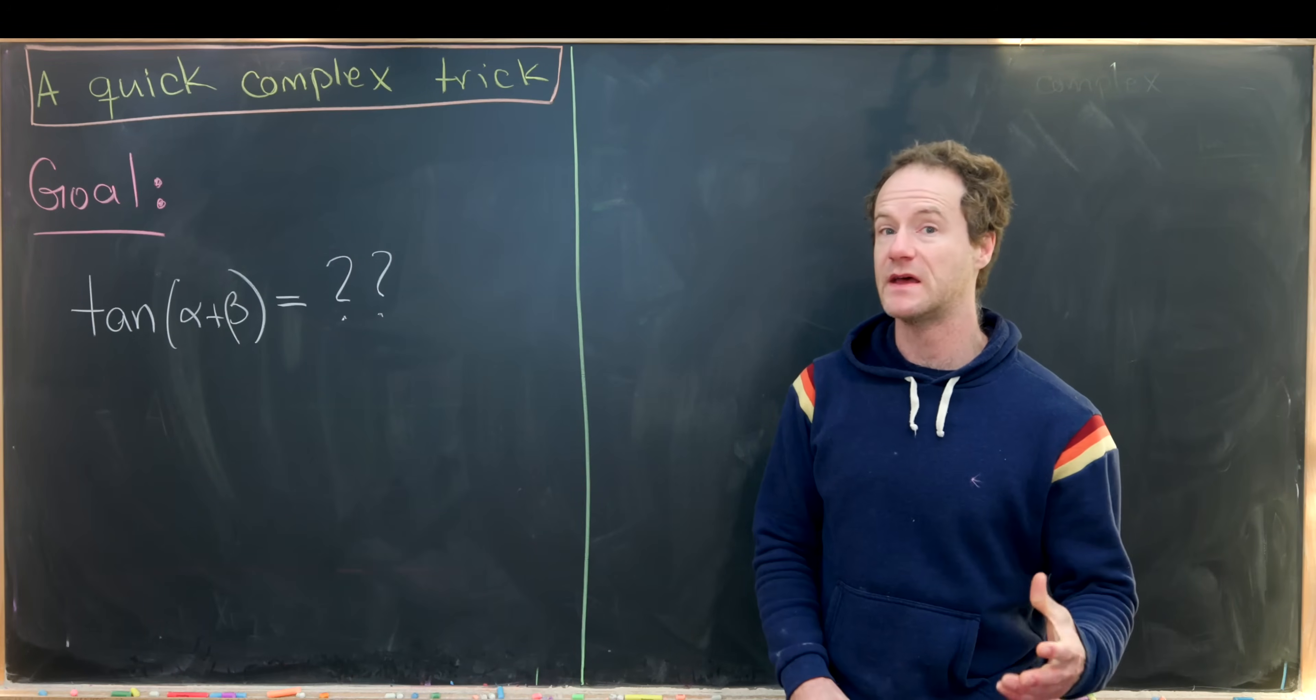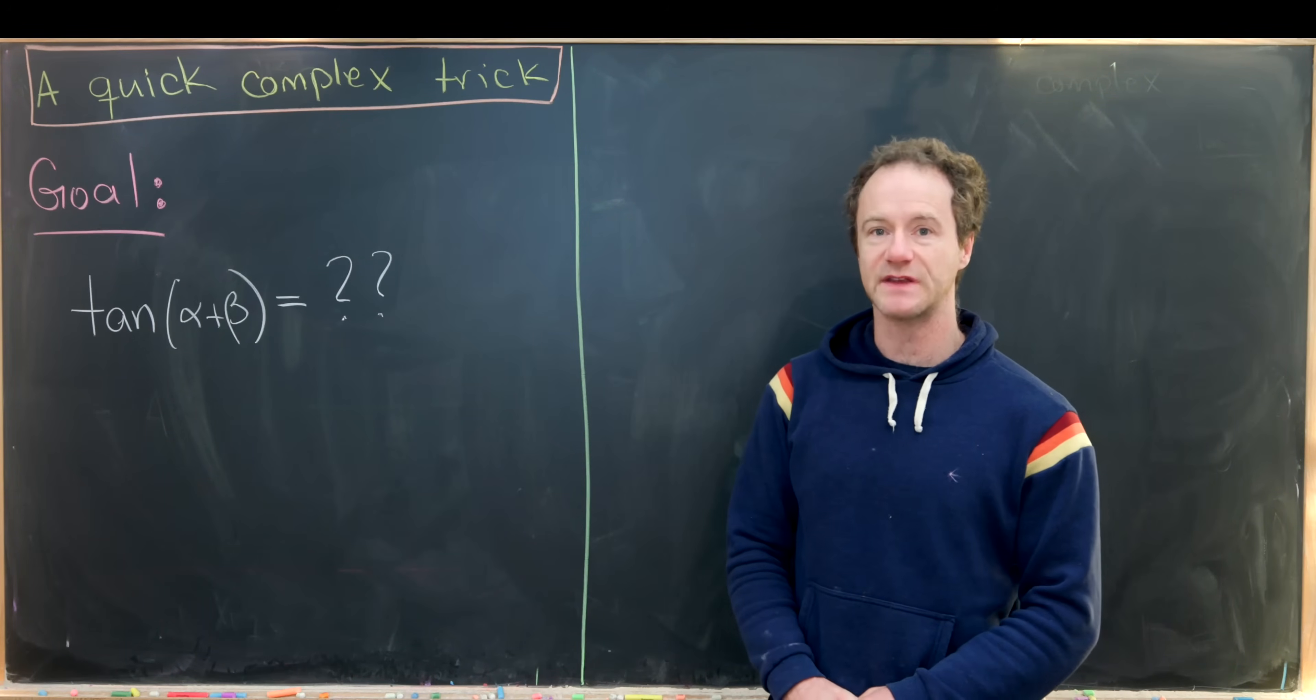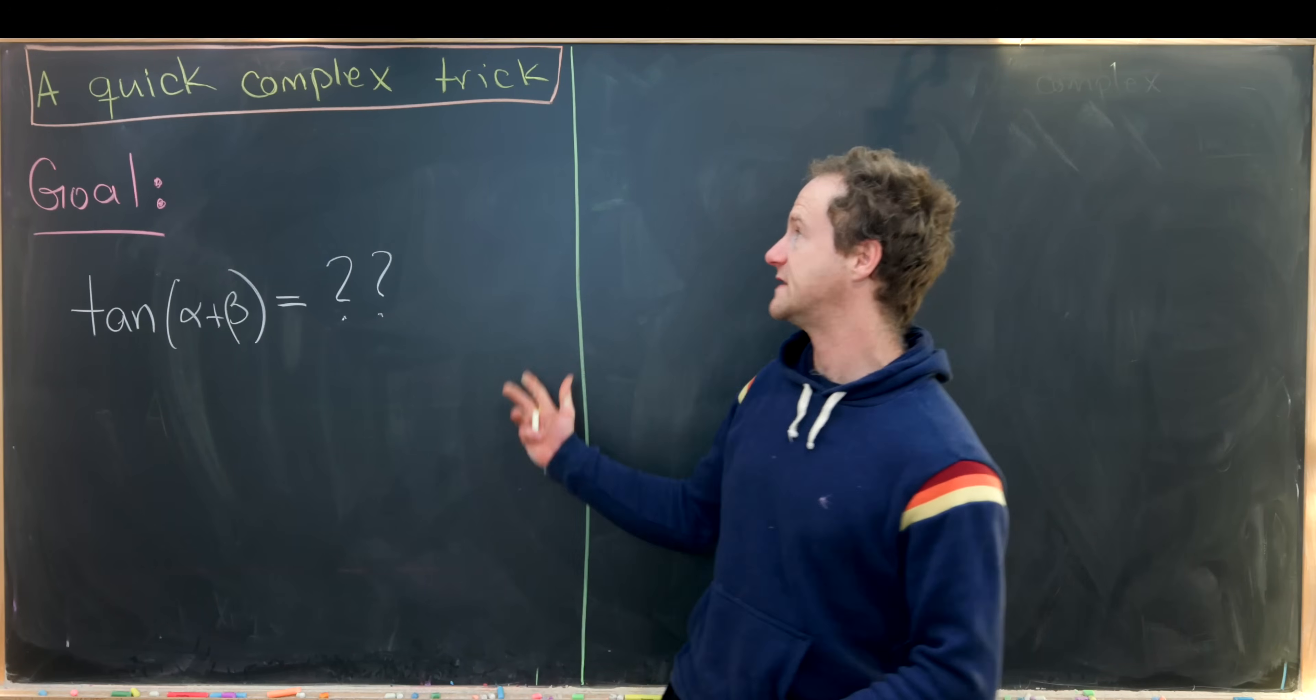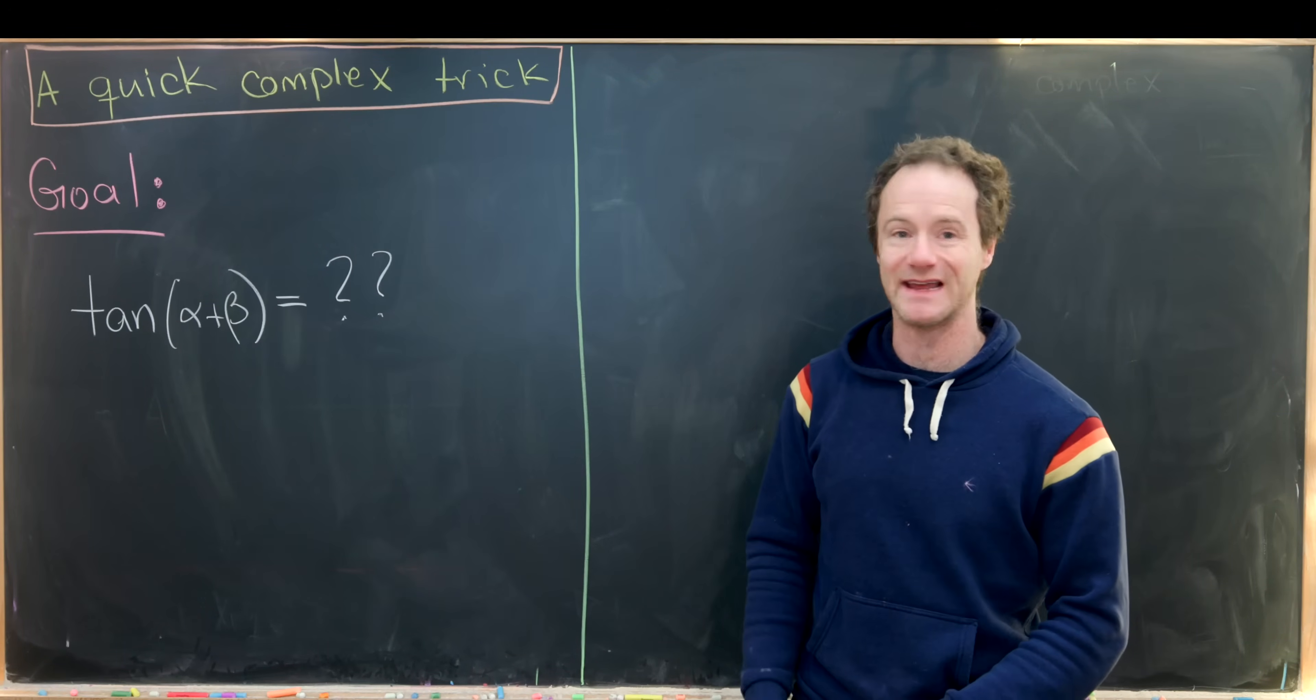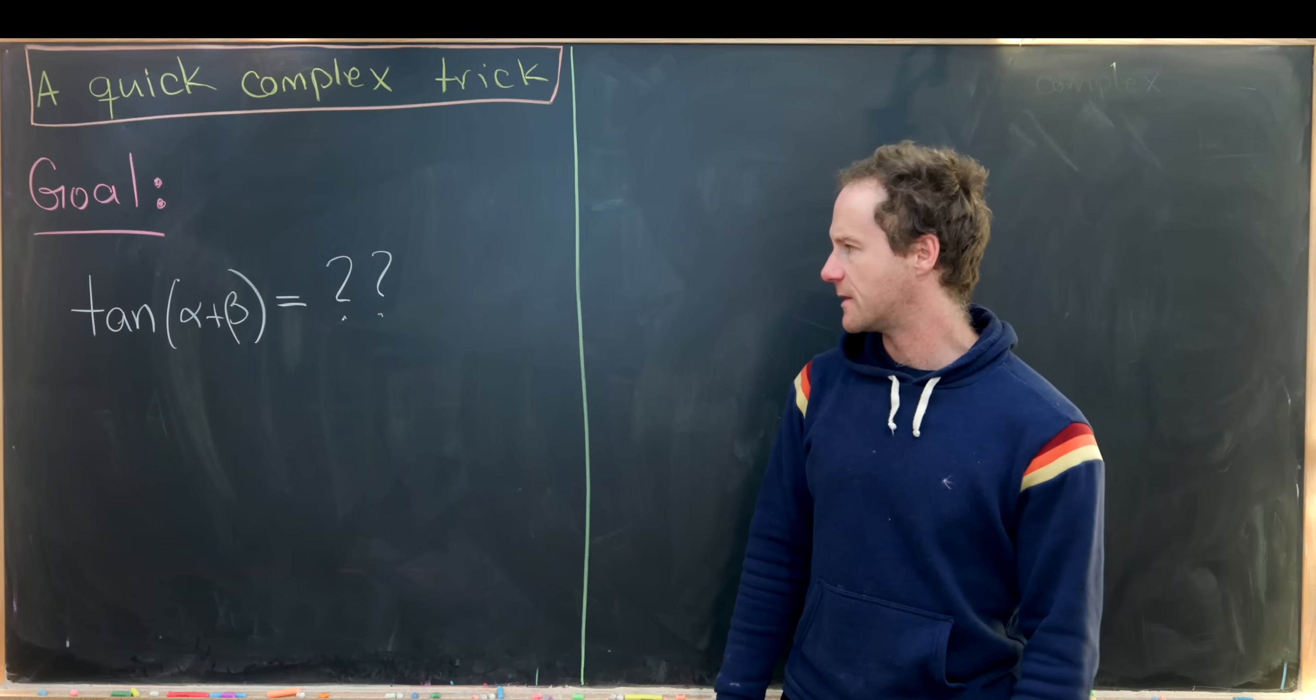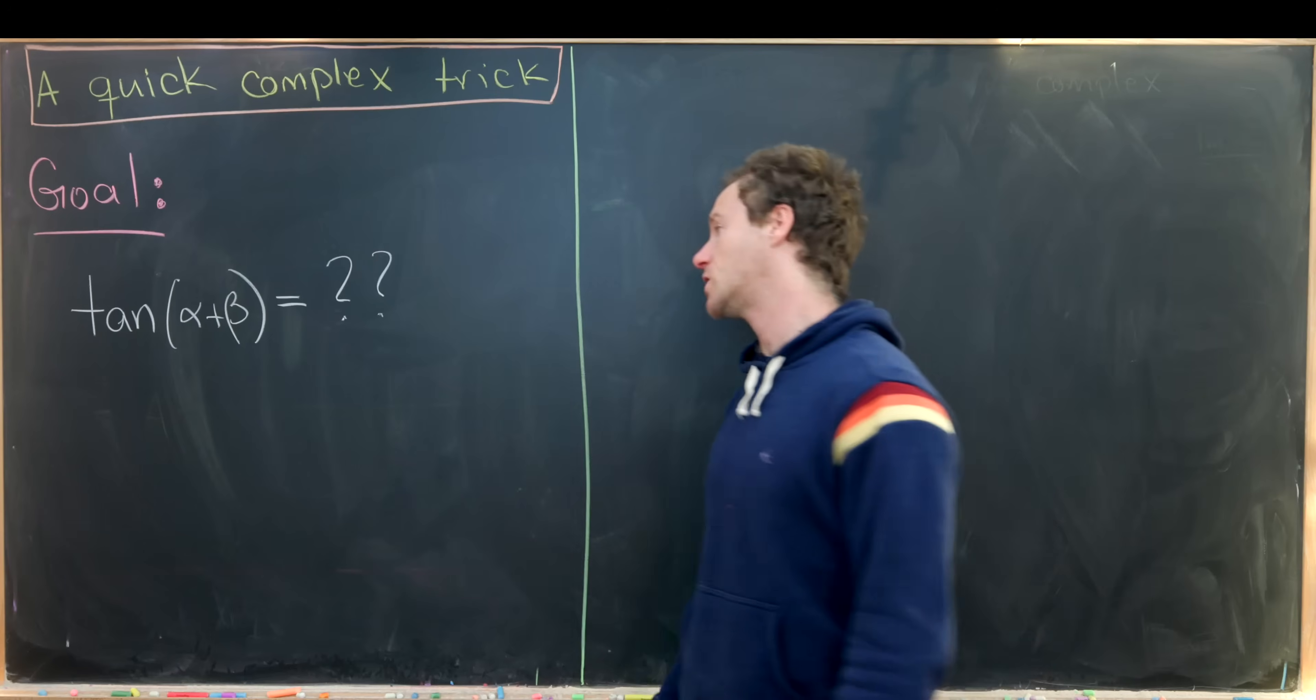Now that we've reviewed a bit about the geometry of complex numbers and their polar form, we're ready to derive our identity, this sum angle formula for tangent. So how could we do that? Well, I'd like to introduce two complex numbers.